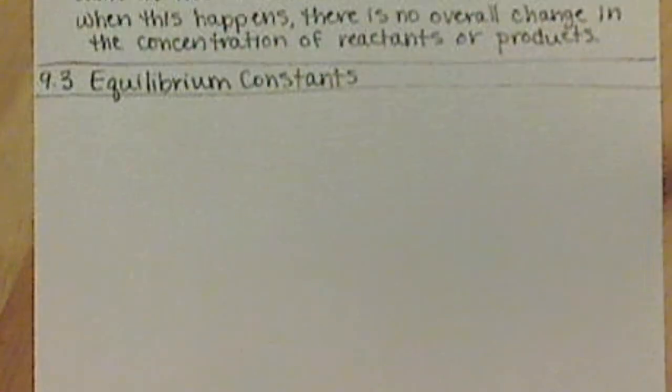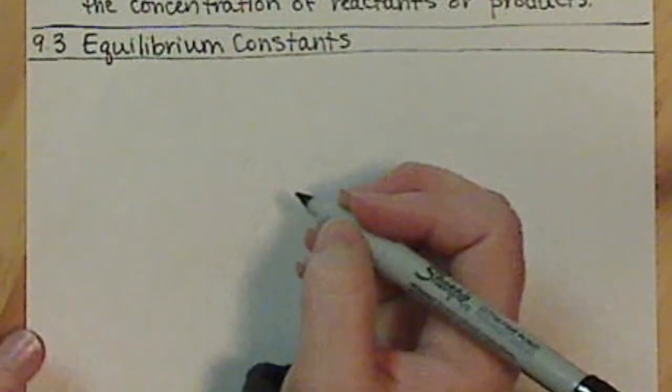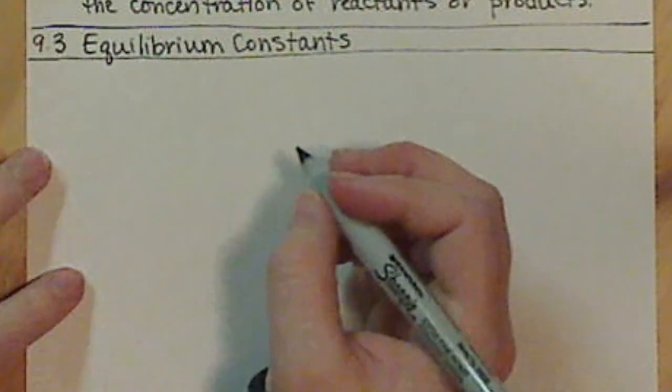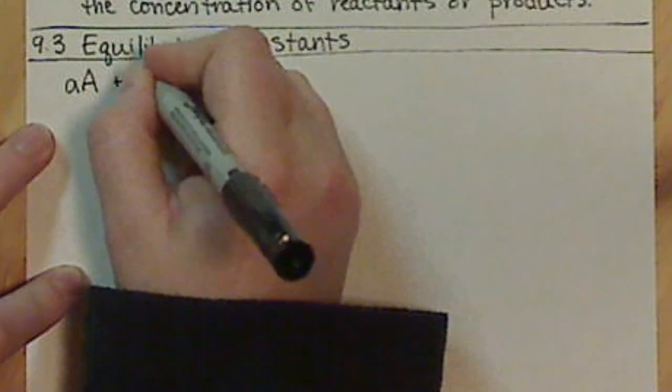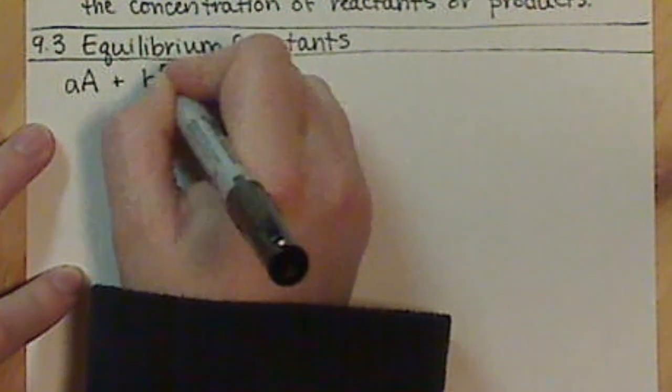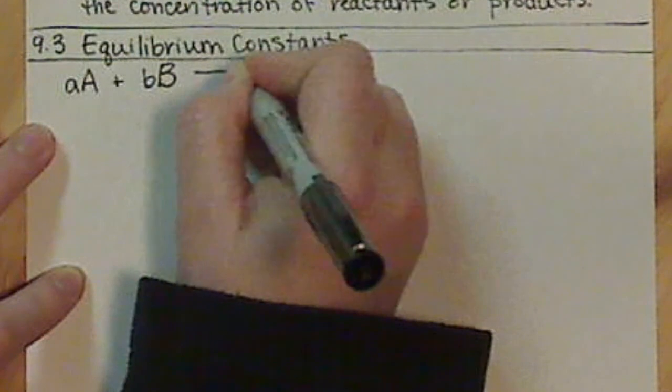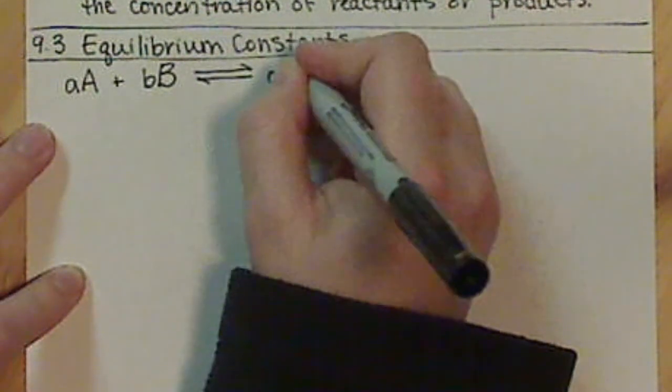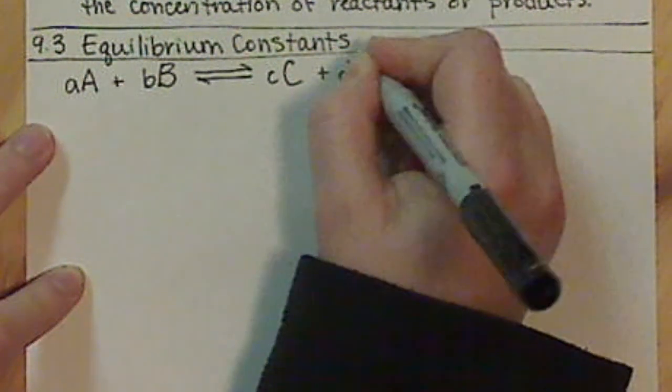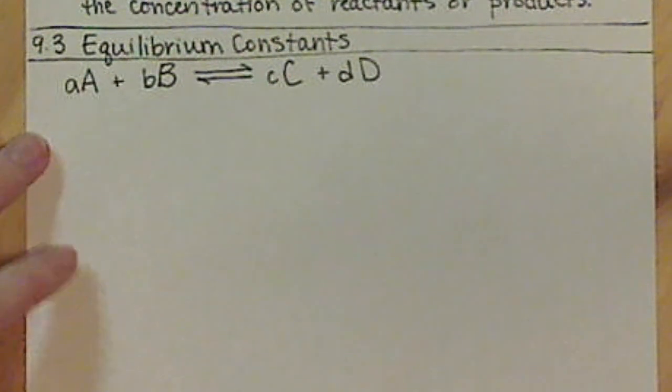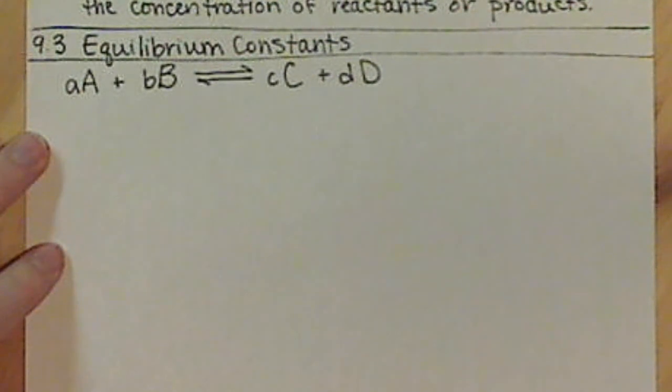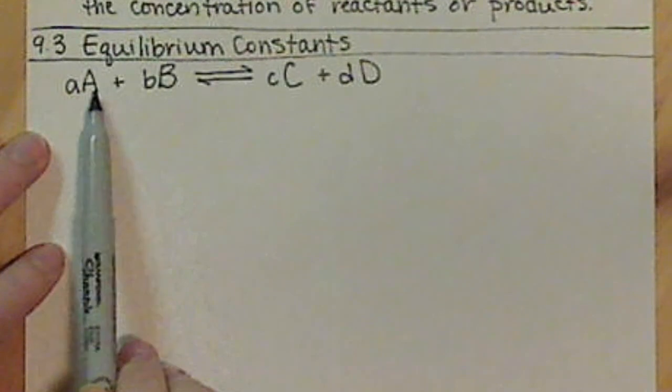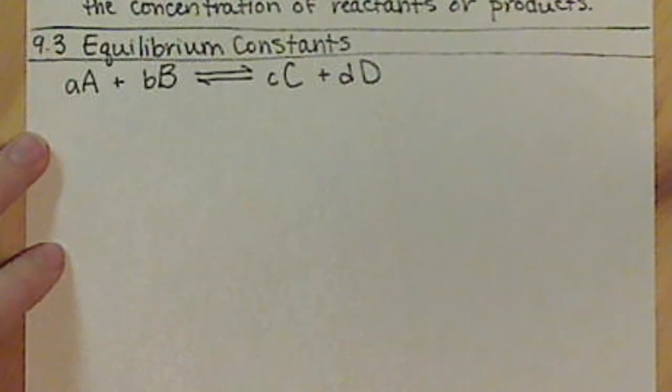We want to just start out generally here. So we're going to look at a very generic equation. We're going to say that we're going to take reactants A and B, and they're going to be in equilibrium with products C and D. Our lowercase letters out front are the coefficients of our balanced chemical equation, and then the capital letters are just representing that chemical formula.